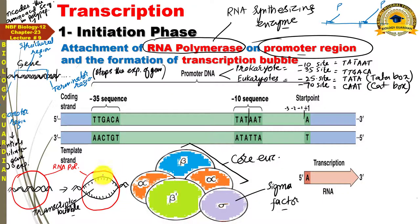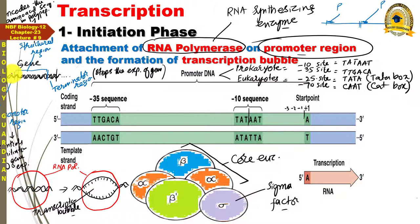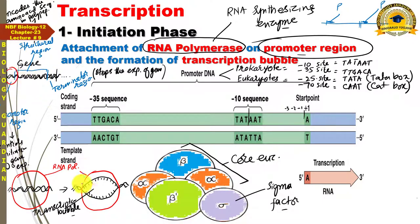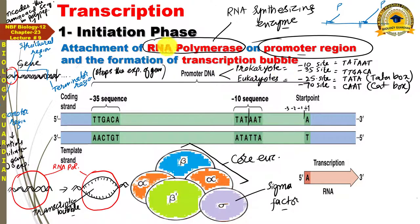Replication bubble کی طرح یہاں transcription bubble ہے۔ لیکن replication bubble کے ساتھ replication fork کا ذکر کیا جاتا تھا - یہاں صرف transcription bubble کا ذکر ہوگا، transcription fork کا نہیں۔ کیونکہ یہ bubble صرف اس حصے میں ہے جہاں RNA polymerase ہے۔ Initiation phase کے events: attachment of RNA polymerase on the promoter region and the formation of transcription bubble۔